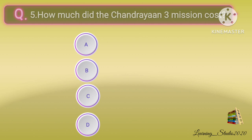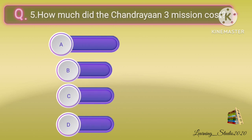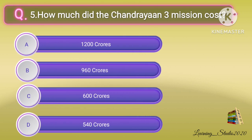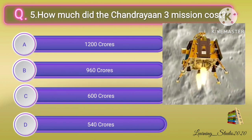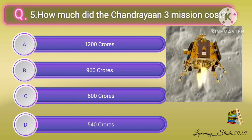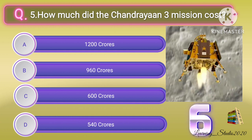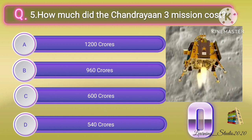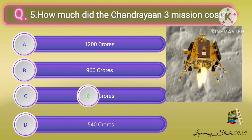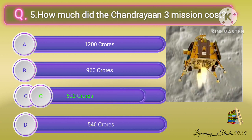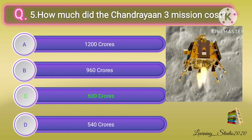How much did the Chandrayaan 3 mission cost? Correct answer: option C, 600 crores.